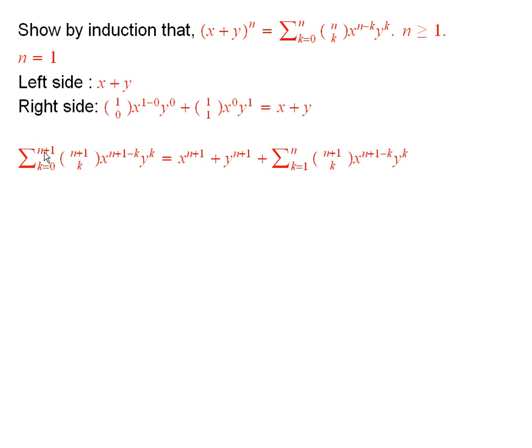I will take out the top term and the bottom term. The top term is x to the n plus 1. The bottom term, when k equal to 0, is just... well, the bottom term is x to the n plus 1. The top term is y to the n plus 1. So I take those two out, and then I have what's left, the sum from 1 up to n of this expression here.